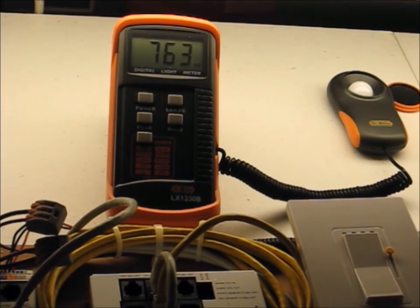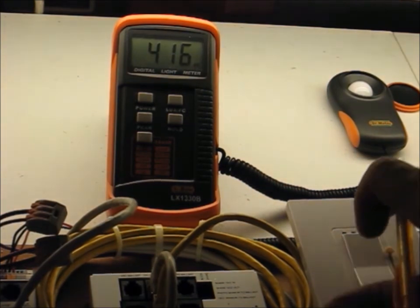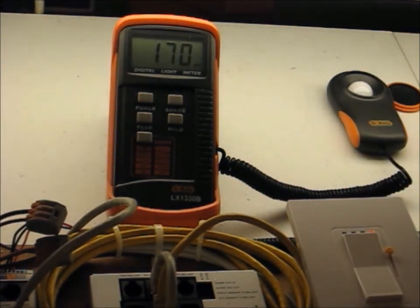So we've got a full output of 763, and our 75 percent dimming allegedly is 613 foot candles. Now I've got 416 foot candles, and now I've got 170 foot candles. I'll take a few readings and average them and then we will crunch the numbers.